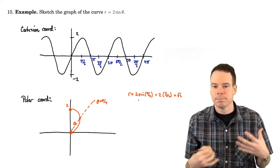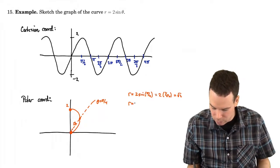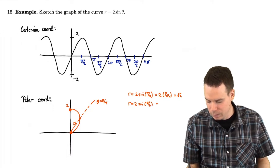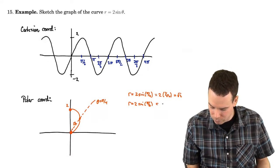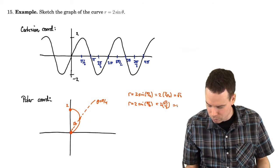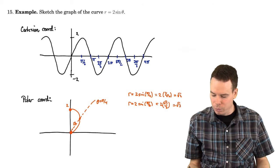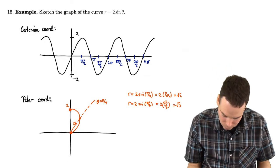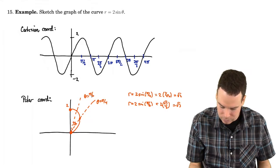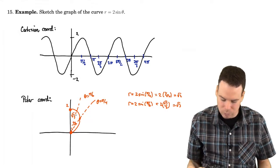What if I'm at pi by 6? What's r of 2 sine pi by 6? Well, sine of pi by 6 is root 3 over 2. So this would be 2 times root 3 over 2 or root 3. So I'm even further away. Root 3 is bigger than root 2. So I'm even further away. So I'm up here somewhere. There's my theta is pi by 6. And now my distance is root 3.